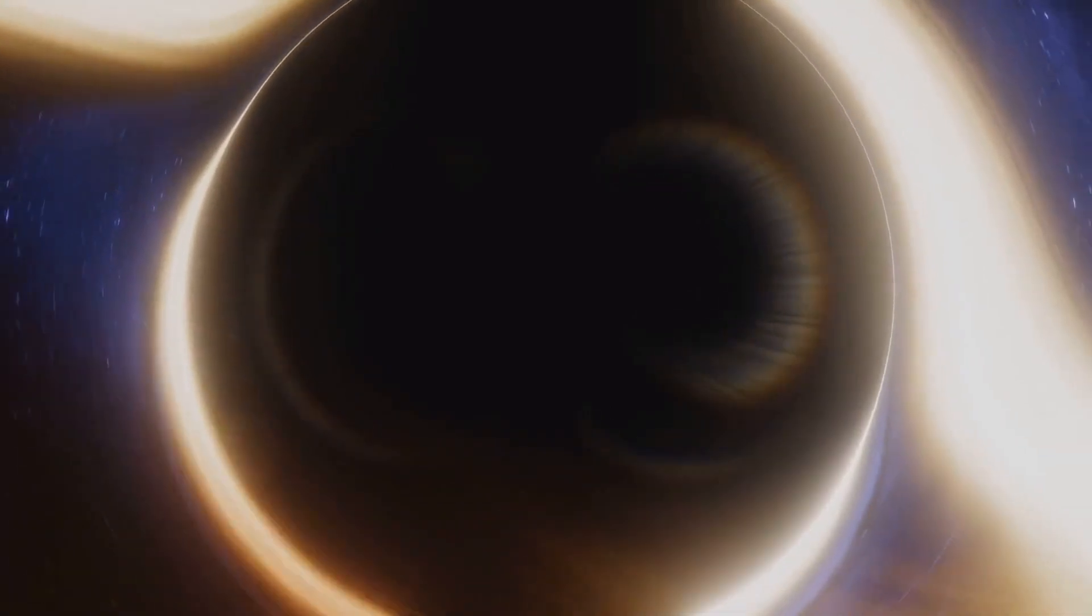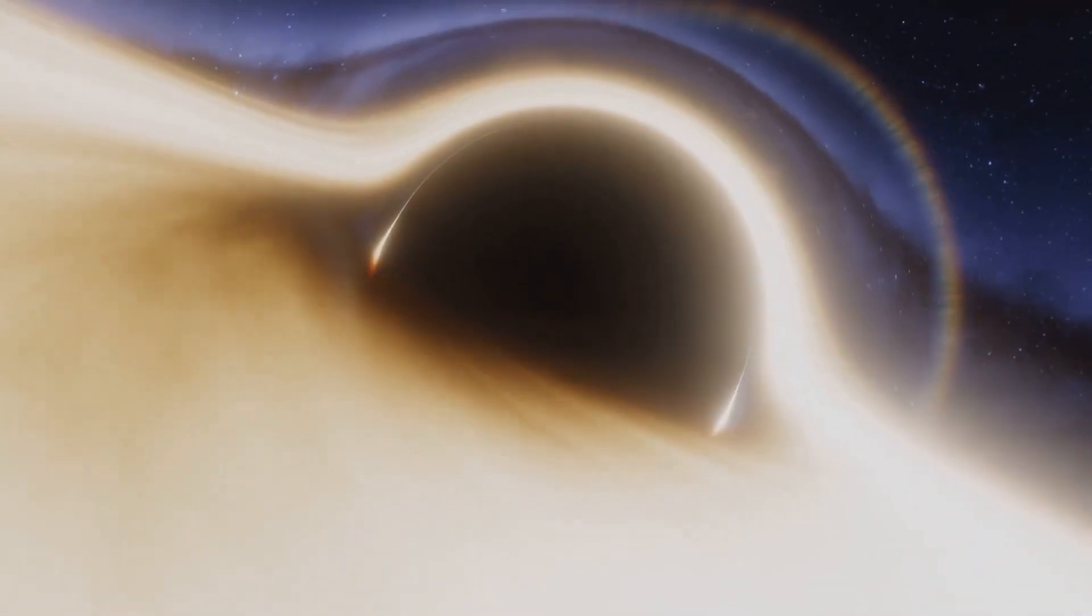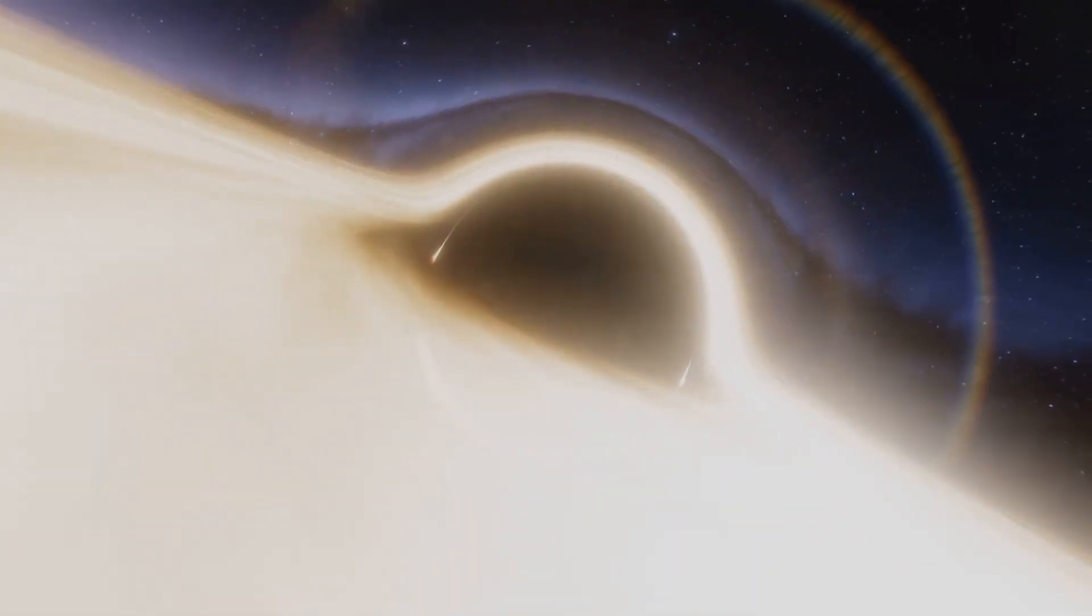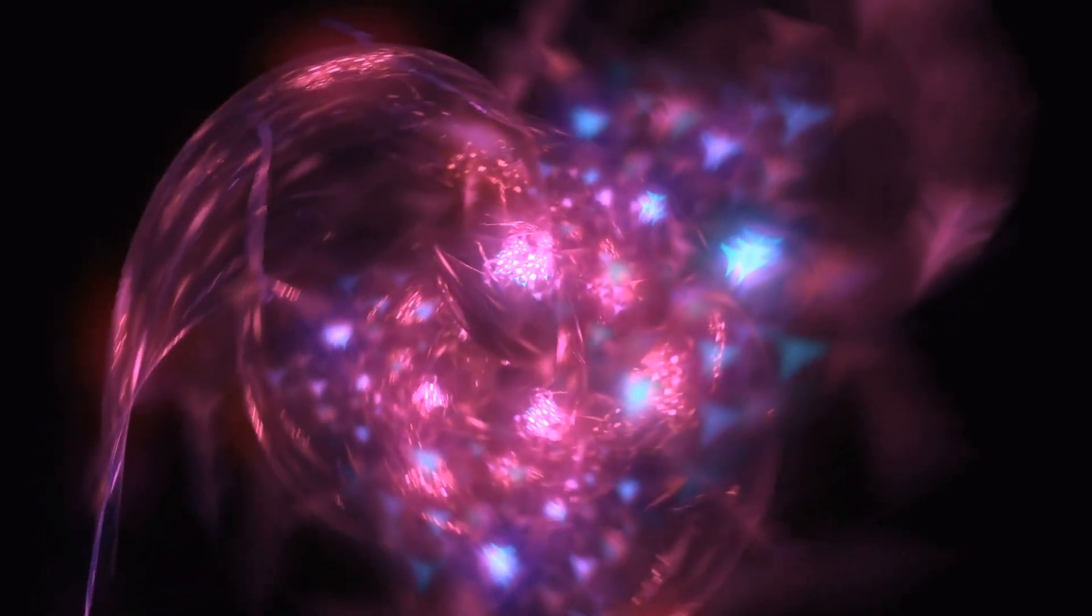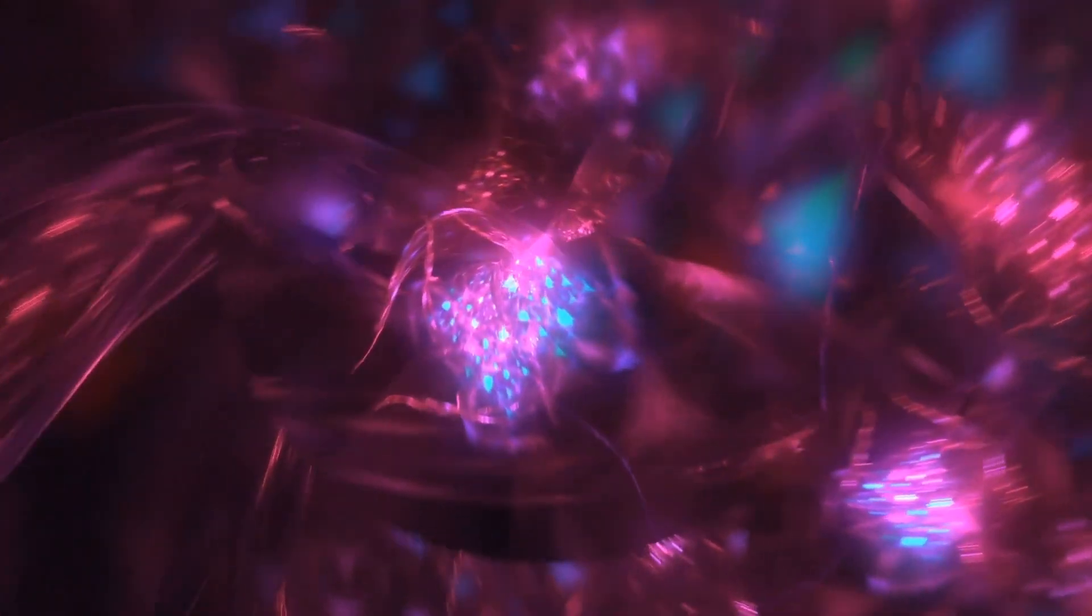Furthermore, supermassive black holes at the centers of galaxies can remain hidden by the dense surrounding dust and gas, further obstructing direct observation. In some cases, instead of pulling matter into their interiors, black holes can expel it, generating jets of bright and rapidly moving material that can be observed from afar.